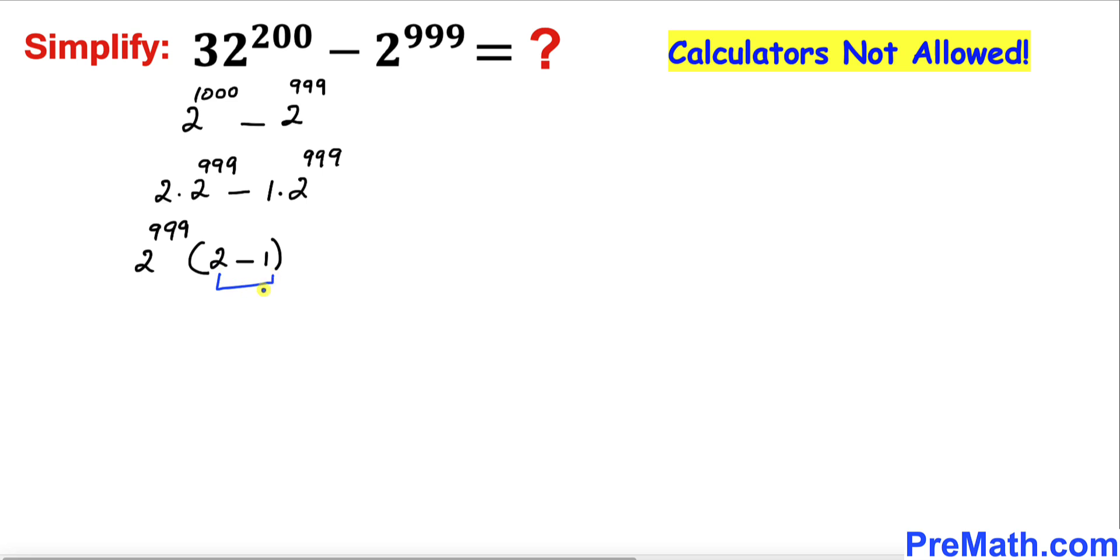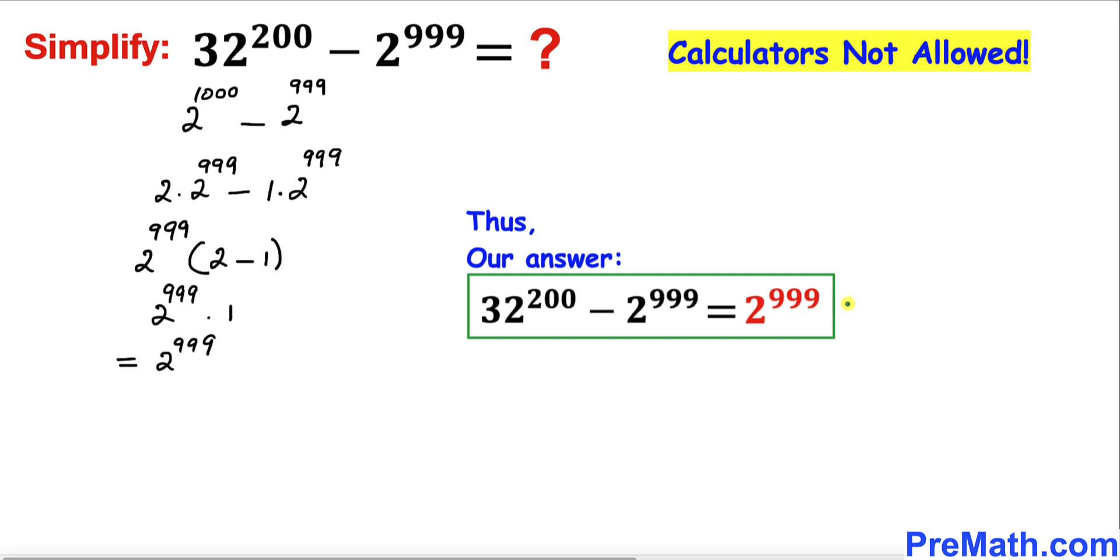Therefore our simplified answer turns out to be 2 to the power 999. Thus our simplified answer turns out to be 2 to the power 999. Thanks for watching.